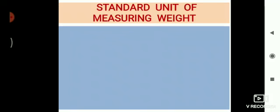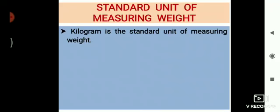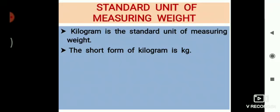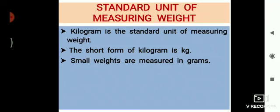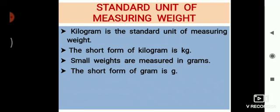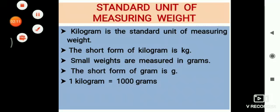Now let's discuss the standard unit of measuring weight. Standard units of measurement are the units which are typically used within each metric system. The standard unit of measuring weight is kilogram. The short form of kilogram is kg. Small weights are measured in grams, and the short form of gram is g. One kilogram is equal to thousand grams.